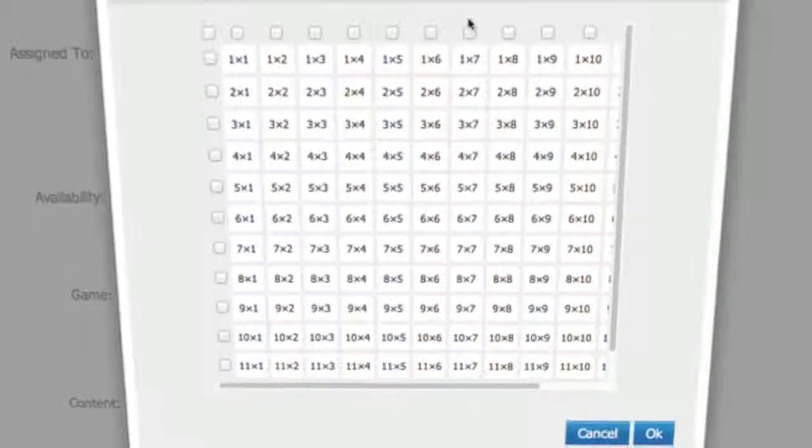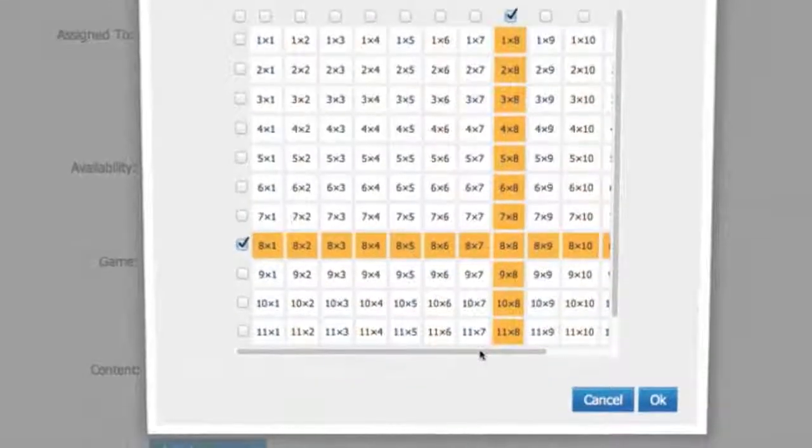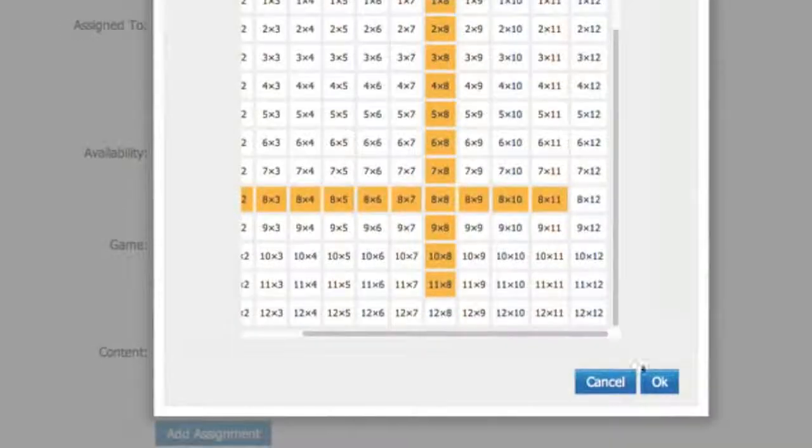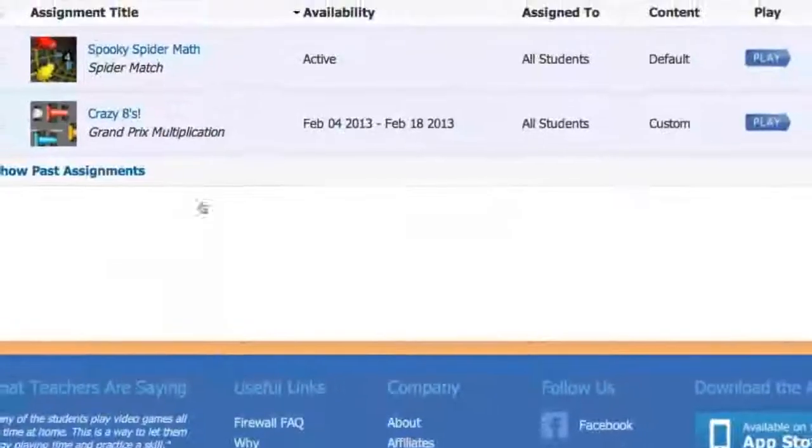Or if your class is working on the multiplication table of eight, you can make a game that only shows those problems. Since we want the eights, select the eights column and the eights row. You can also deselect problems you don't want in the game, say eight times 12 and 12 times eight. Click OK. When you click add assignment, the game will show up in the student's homepage.